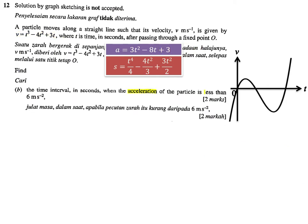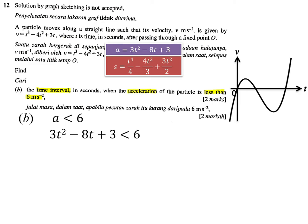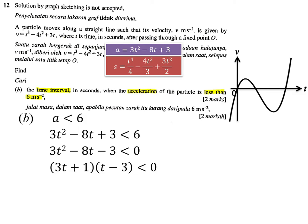Next part: acceleration is less than 6 — find the time interval. The concept is a < 6, so write 3t² - 8t + 3 < 6. To solve it, get the general form first by moving 6 to the other side: 3t² - 8t - 3 < 0. Then factorize — you will get the roots -1/3 and positive 3, then draw the smiley face (parabola sketch).